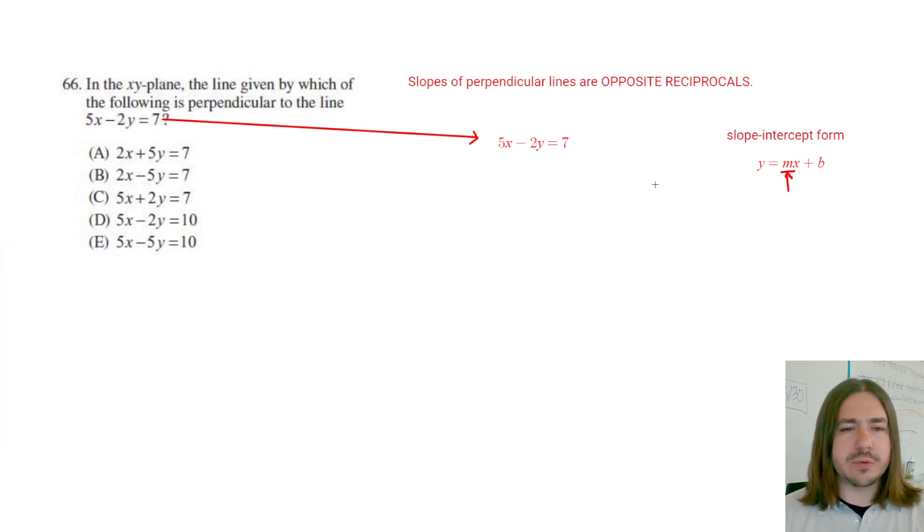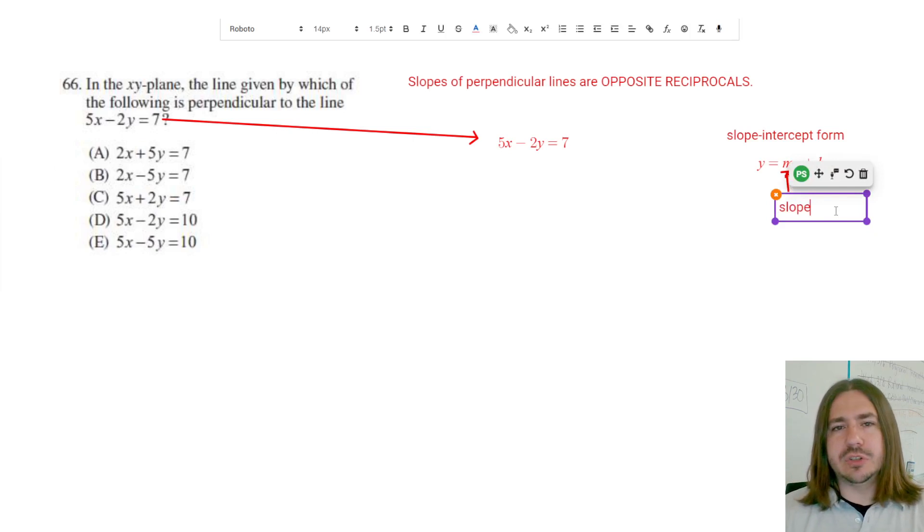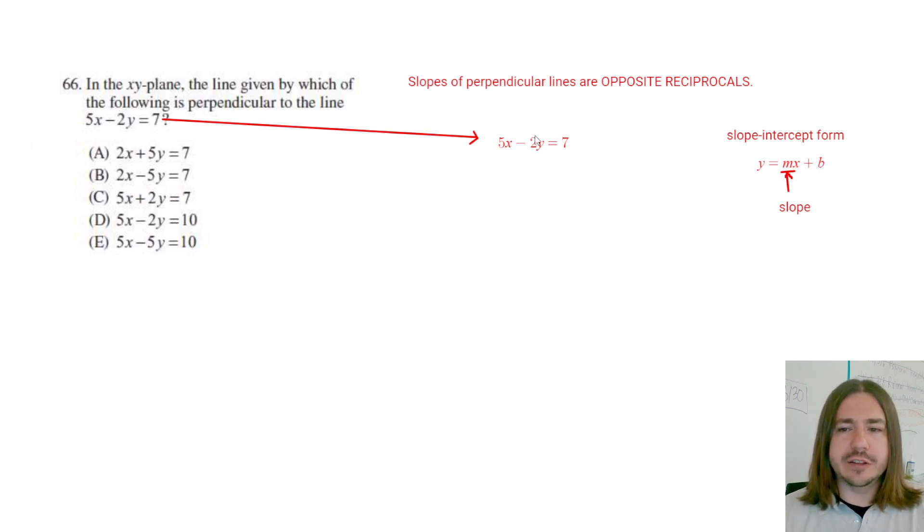Now what I'm going to do is I'm going to rearrange this algebraically, but I also want to be thinking about how we might be able to more efficiently calculate the slopes because we don't want to have to rearrange all these equations. So I want to pay close attention to where the slope is coming from when I rearrange this first equation. And let's see if we can come up with a shortcut to finding the slopes of all these other ones.